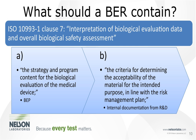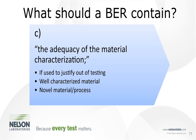Part A covers the strategy and program content for the biological evaluation of the medical device — laying out what the evaluation plan was. Part B covers the criteria for determining the acceptability of the material for the intended purpose in line with the risk management plan, which is typically done well before presenting a final device for testing and should reference internal R&D documentation or a device history file.